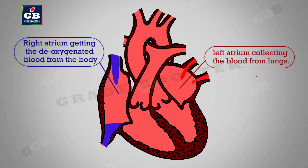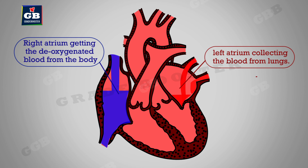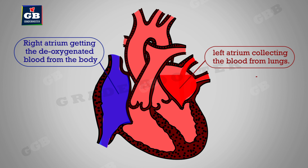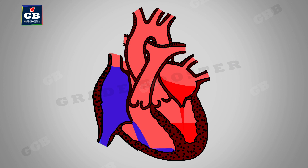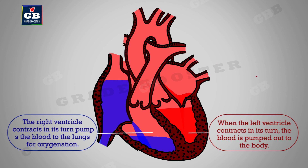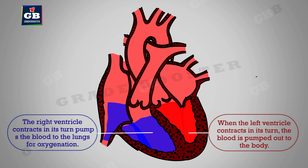Let's see how it works in action. The left atrium and right atrium relax — the left atrium collects blood from the lungs, while the right atrium receives deoxygenated blood from the body. As they contract, the left ventricle and right ventricle expand so that blood is transferred to them.